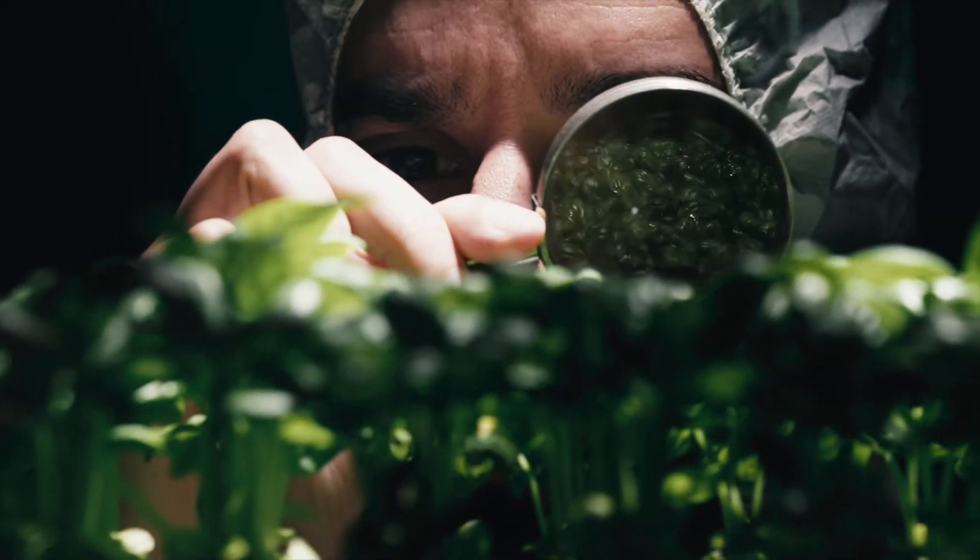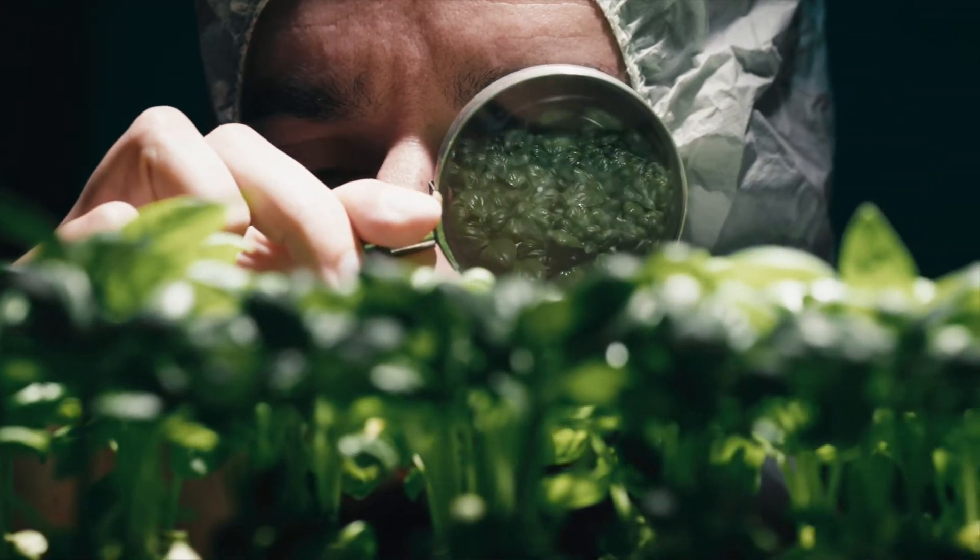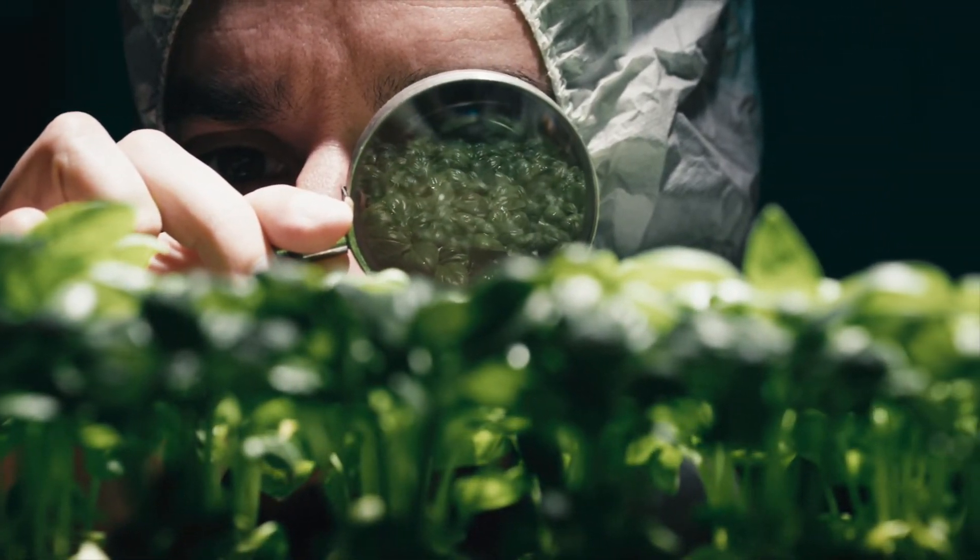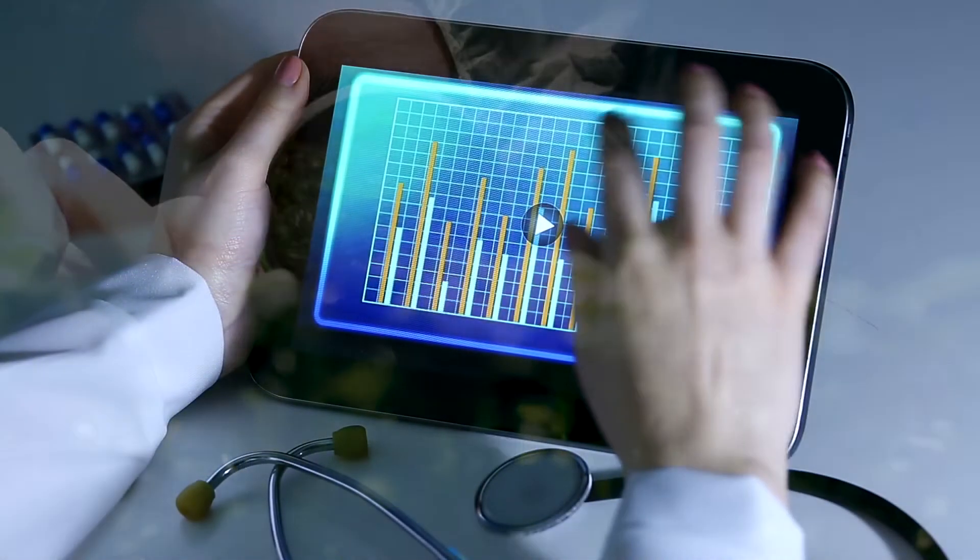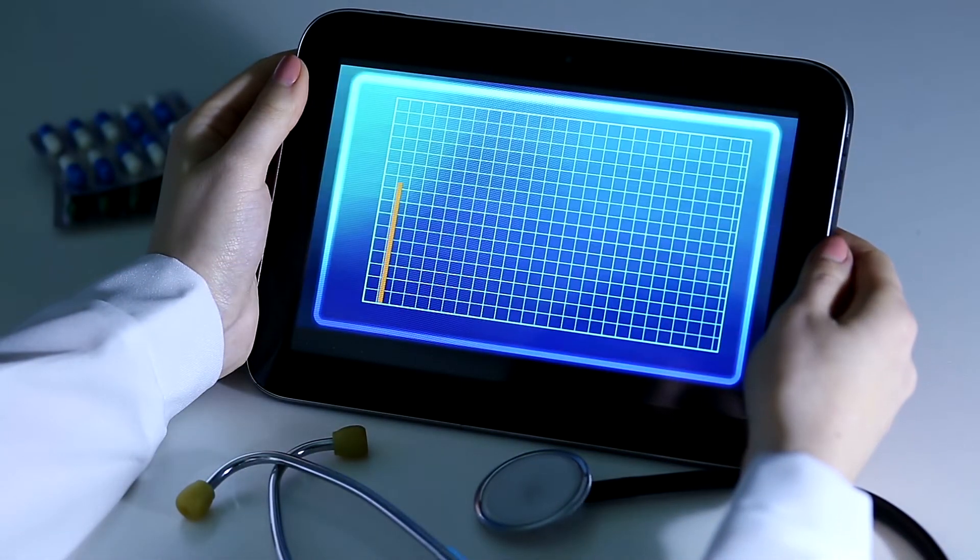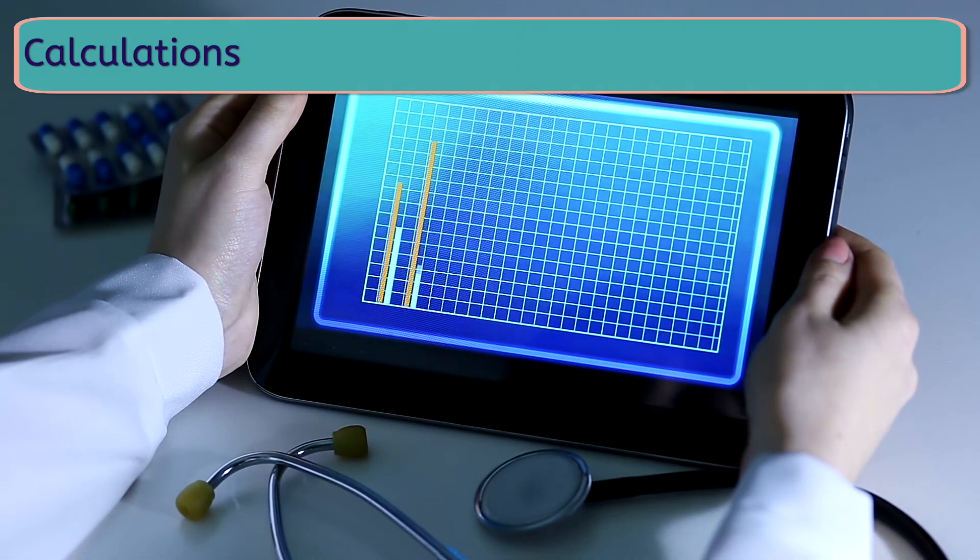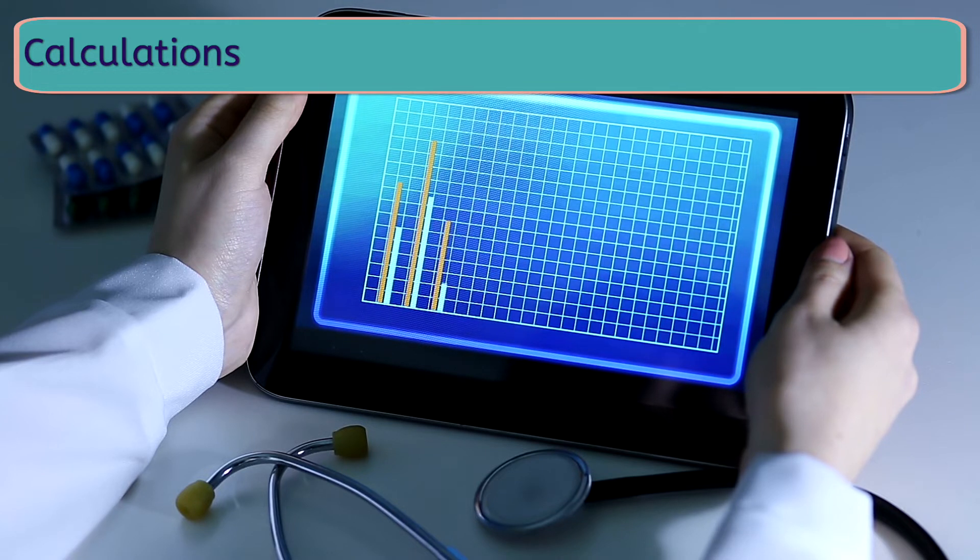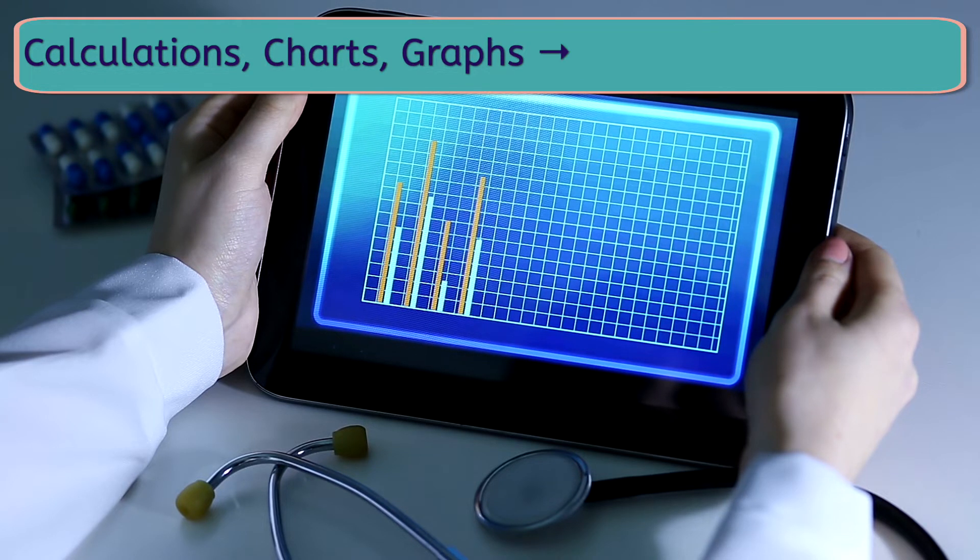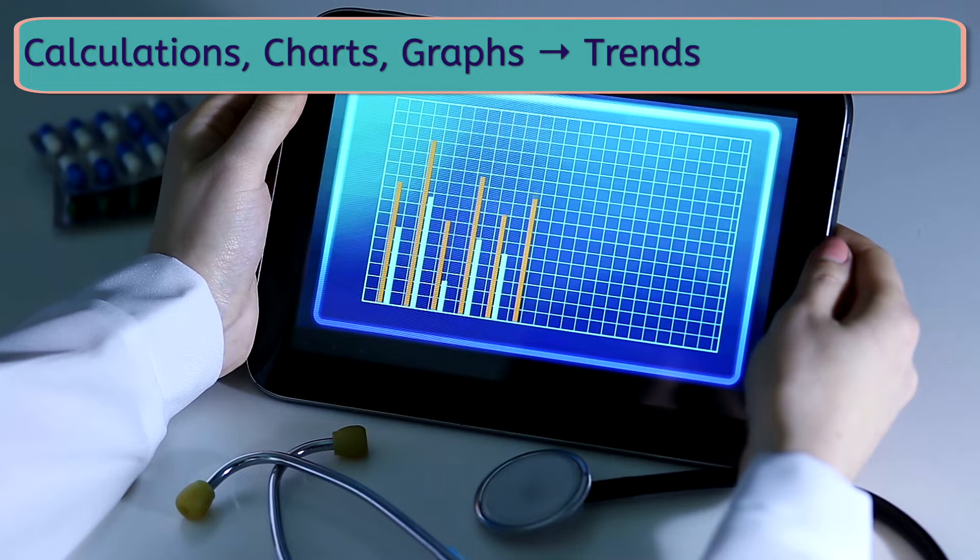You probably guessed that the data appears to support our hypothesis. But to do good science, we'll have to be a bit more specific. Data analysis involves more than just looking at the data. We can make calculations, use those calculations to create charts, graphs, and then use the trends we see in those graphs to draw conclusions.